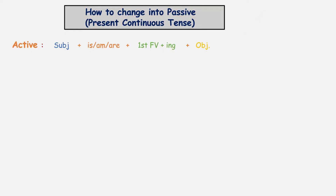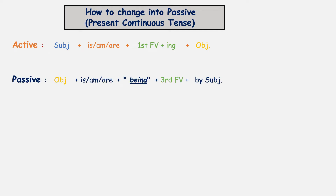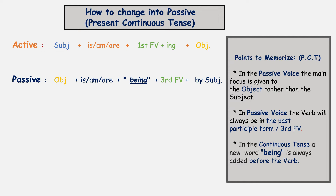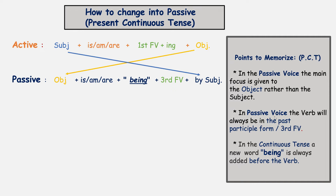Now we will learn how to change active to passive voice in the present continuous tense. Here is the structural formula in its active form, and here is the formula for the passive. When changing active to passive voice, in the passive voice the main focus is given to the object rather than the subject. The object comes to the front, and the subject, which used to be in front in the active, will go to the back. Also, in the passive voice the verb will always be in the past participle form — the third form of the verb.